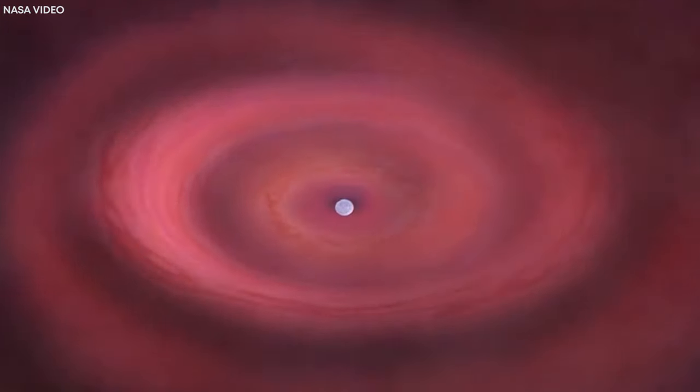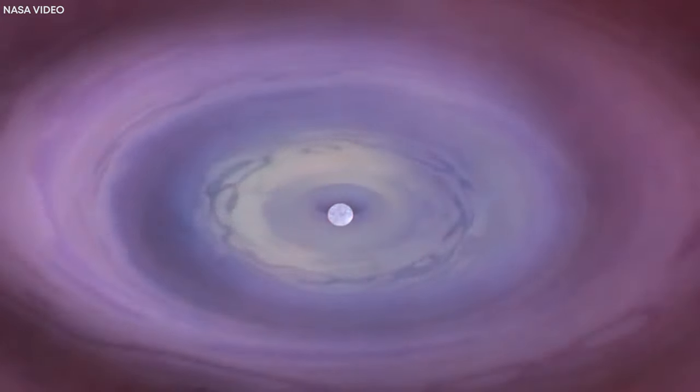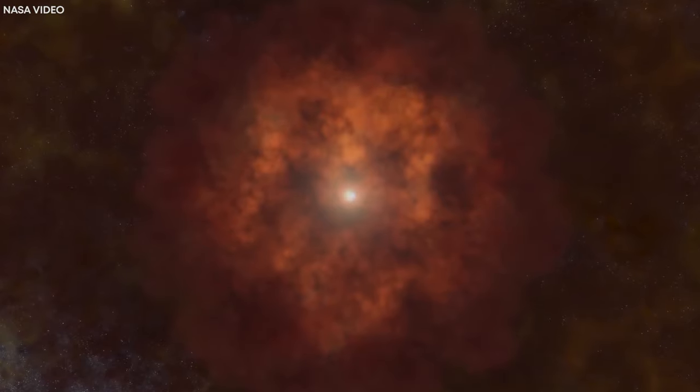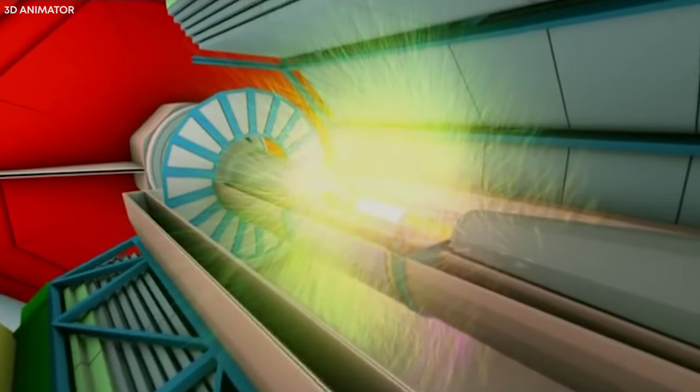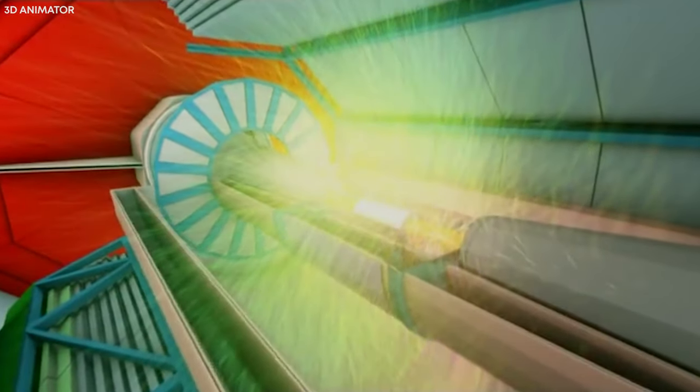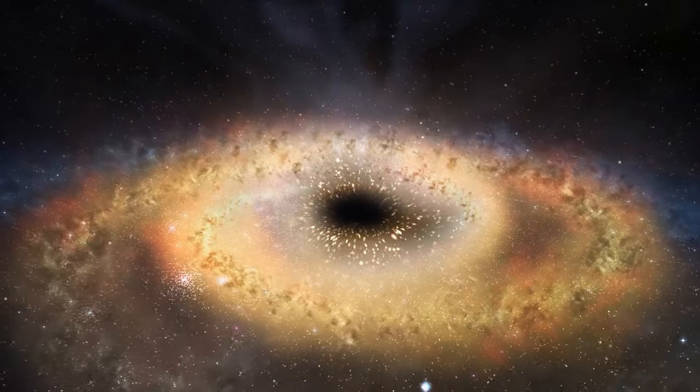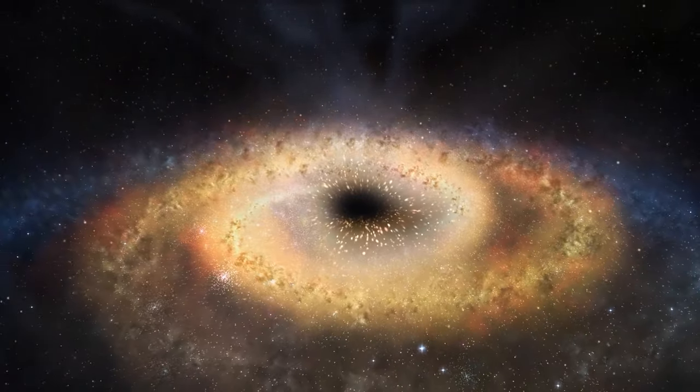Ideally, black holes form when big stars run out of fuel and collapse. The core of the star collapses under its own weight and the remaining mass gets squeezed into a very small and dense object. This object has such strong gravity that it creates a hole in space and time, which is why we call it a black hole.